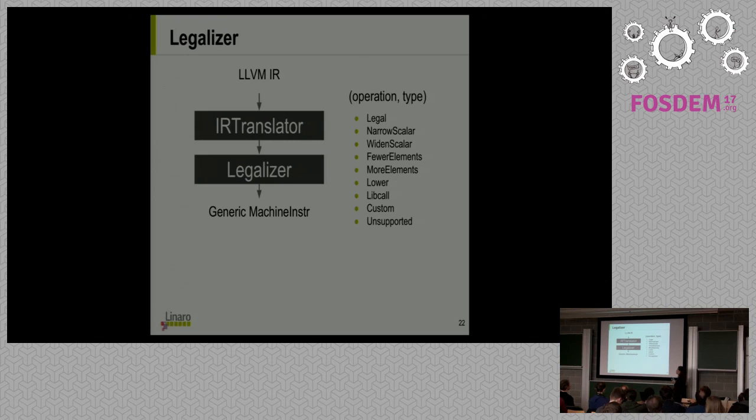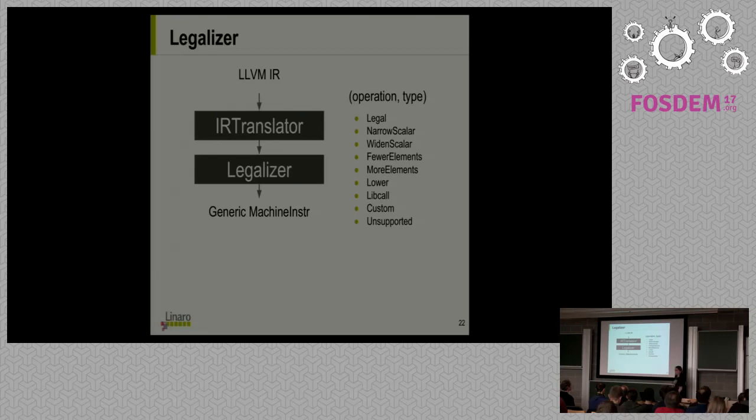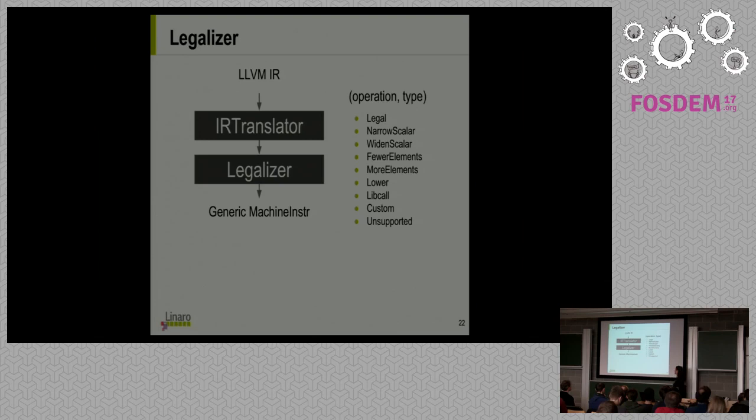At this point, the target is going to have to say for each combination of operation and type what it wants to do. It can mark it as legal, in which case the legalizer does nothing. Or it can choose one of the predefined actions like widening or narrowing a scalar, which means breaking it up into smaller types or introducing extensions to larger types. For vectors, you can ignore some of the lanes, or you can break it up again into smaller vectors. You can replace with library calls, or you can have your own target-specific custom C++ code that does whatever it wants with that operation. Of course, you can also mark it as unsupported, in which case instruction selection will just fail. That's it about the legalizer.